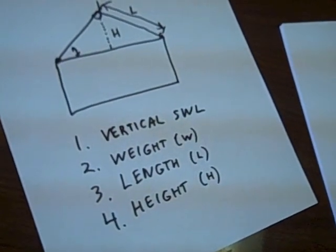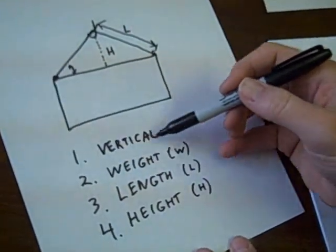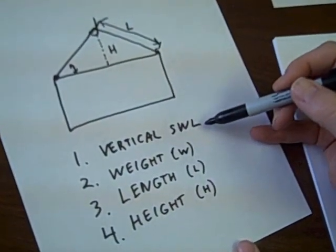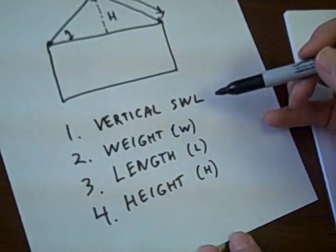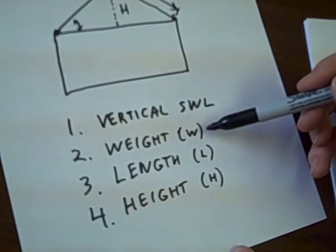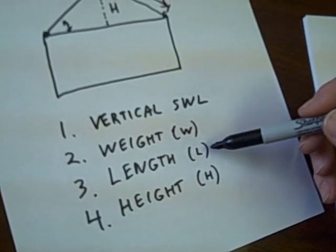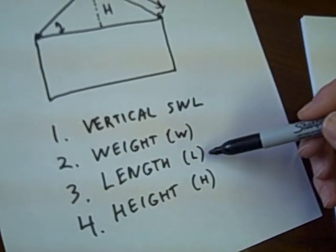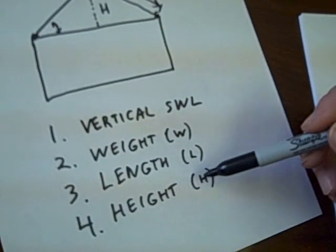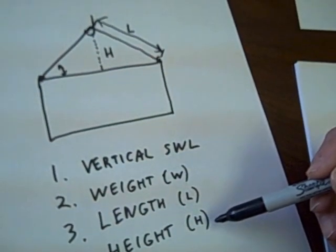So to review the four things we needed to know: the vertical safe working load from the strap itself, the weight, we're going to call that W, the length of the strap, which we're going to call L, and then the height, which is the distance above the load that the hook is.